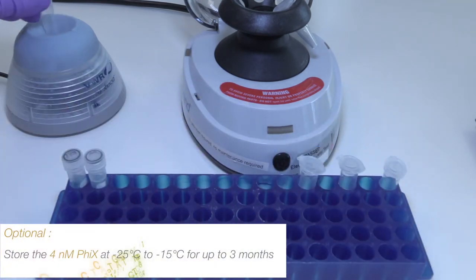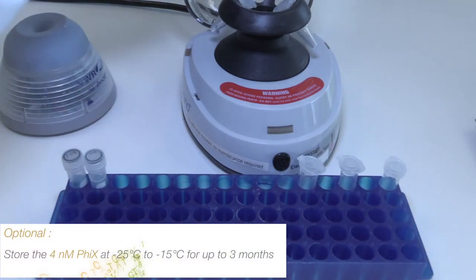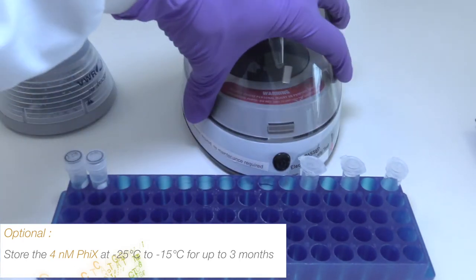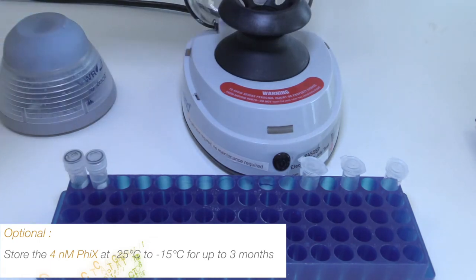Vortex briefly and then pulse centrifuge. You can store the 4 nanomolar Phi-X at minus 25 degrees Celsius to minus 15 degrees Celsius for up to three months.